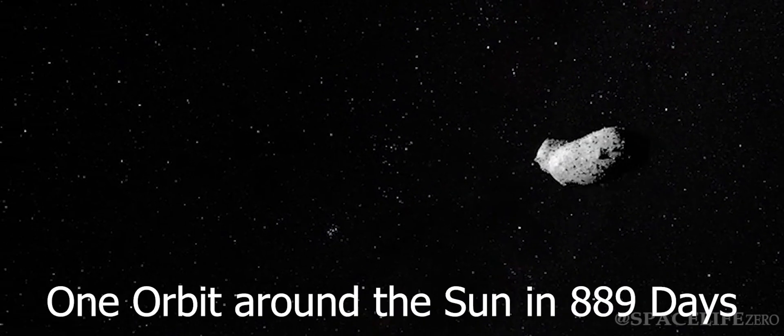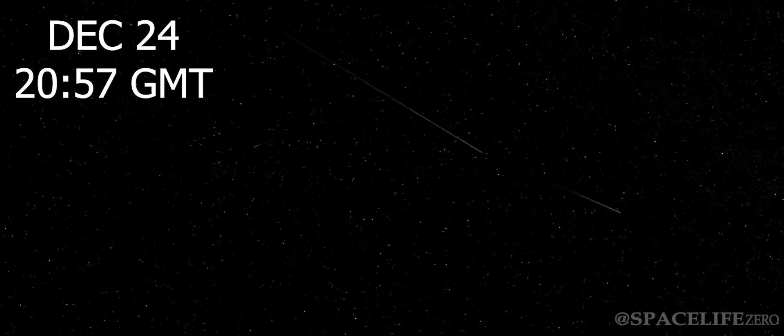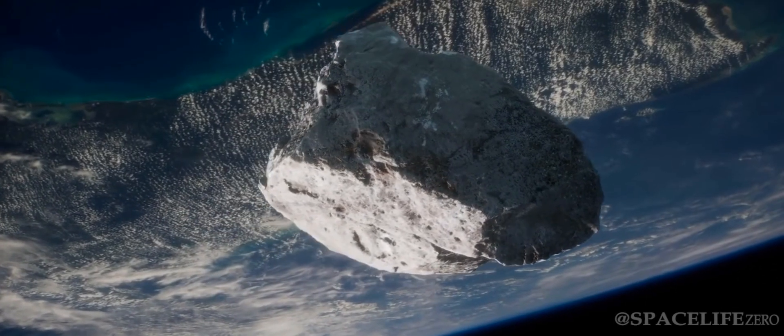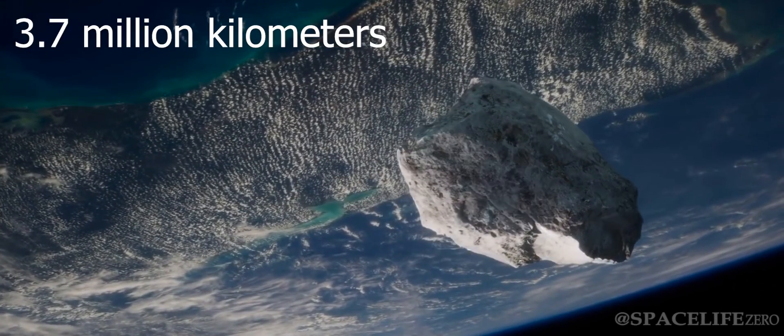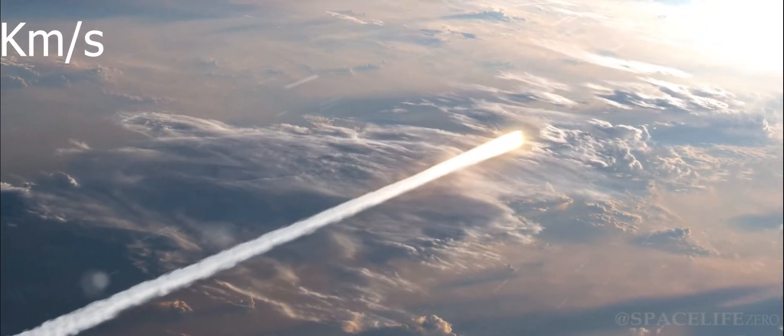It makes one orbit around the Sun in 889 days. On December 24 at 2057 GMT, it will fly past Earth at a close distance of 3.7 million kilometers at an incredible speed of 13 kilometers per second.